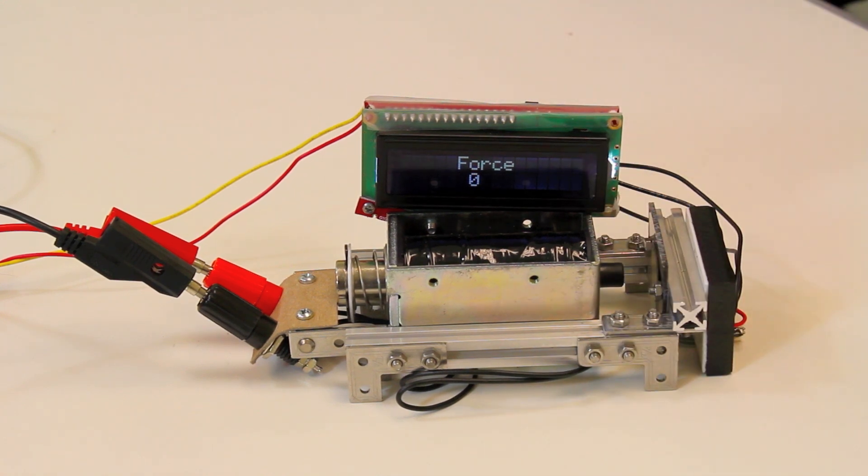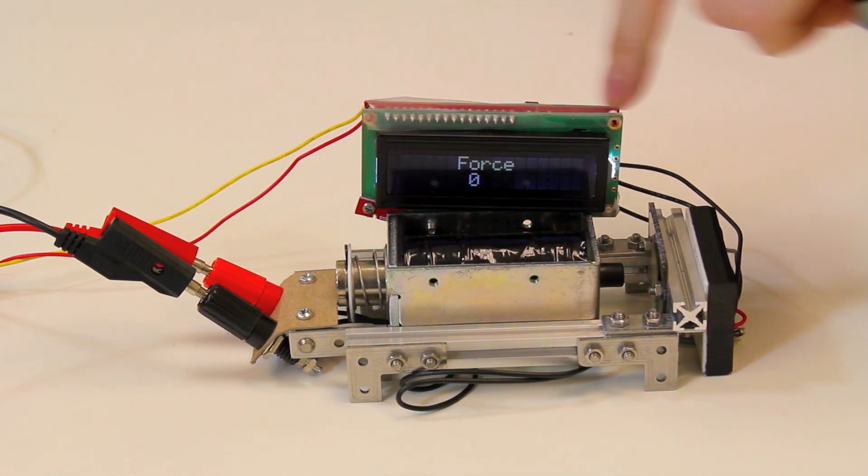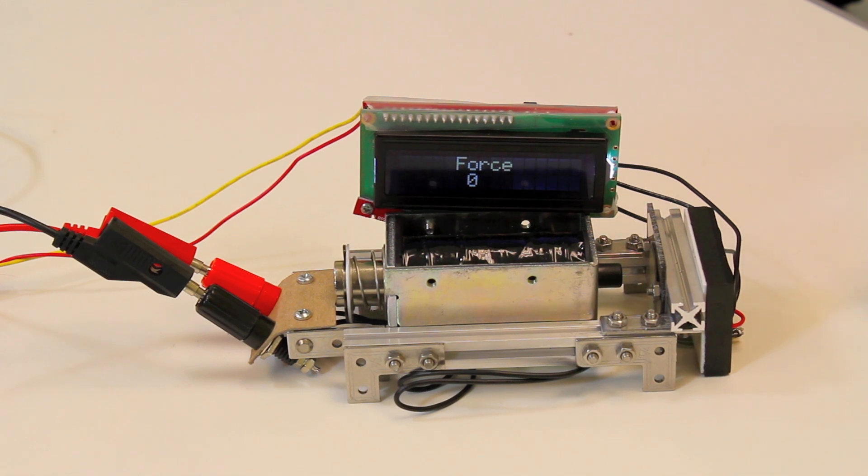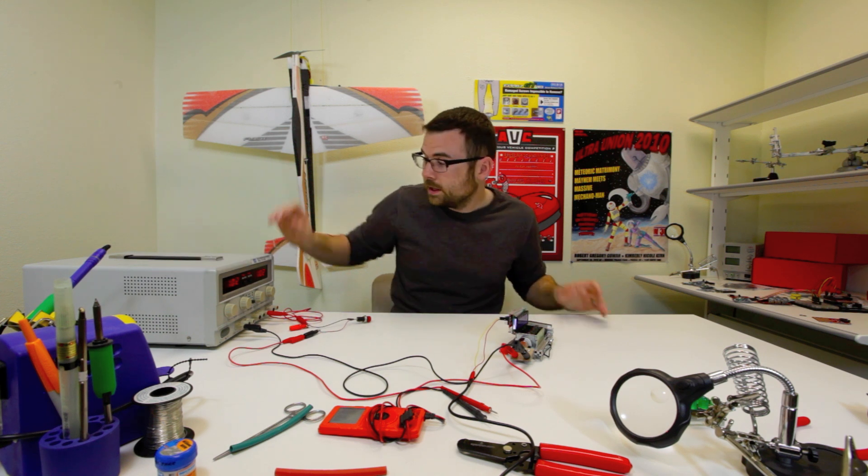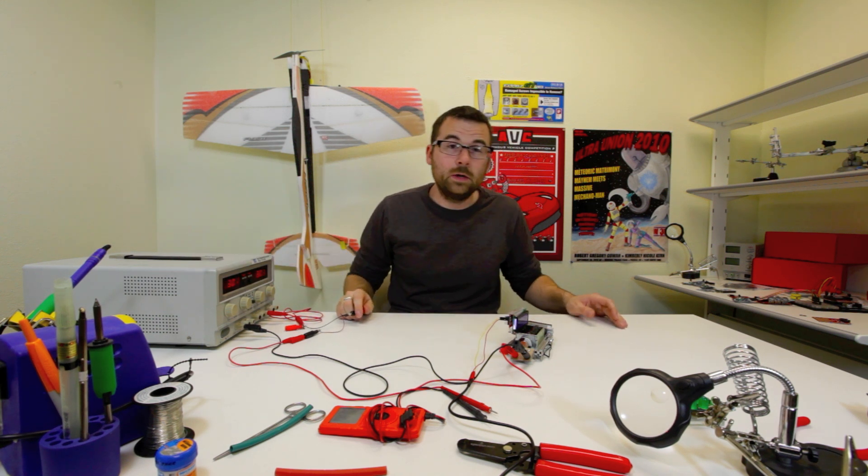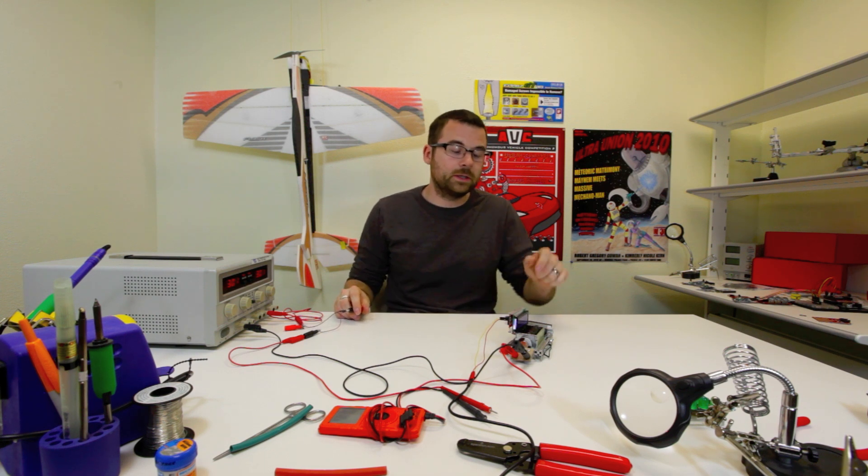And then we've got a force-sensitive resistor at the end of the plunger. So when the plunger activates, it's going to hit that resistor and give us a value that is read into an Arduino and then displayed on an LCD screen as the analog value, which would be 0 to 1023.